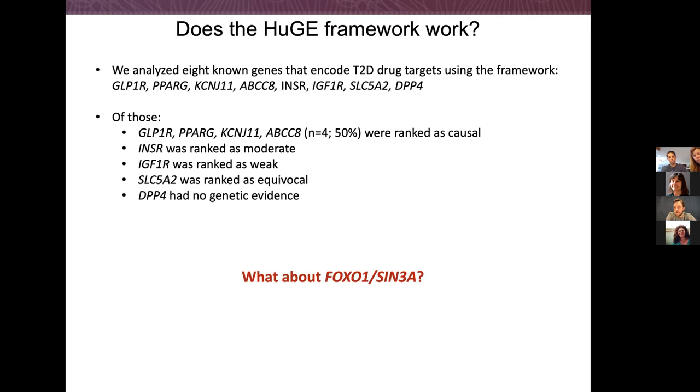Now does it work? We think so. We looked across 8 genes that encode known type 2 diabetes drug targets. When we run these through our HUGE framework, we find 50% are ranked as causal, one is ranked as moderate, one weak, one equivocal, and only one doesn't have any evidence. So seven of eight have some piece of genetic evidence, and 50% are causal. We really view this as a positive result suggesting the framework is working as we'd expect.